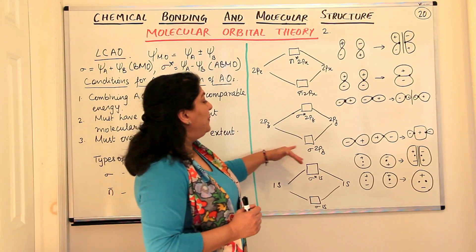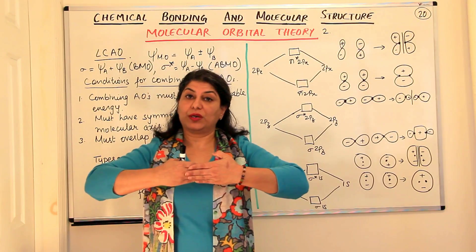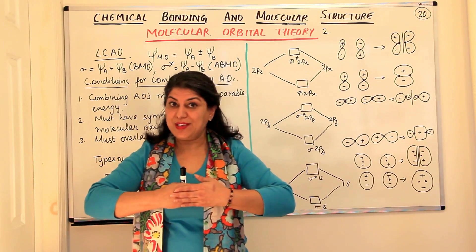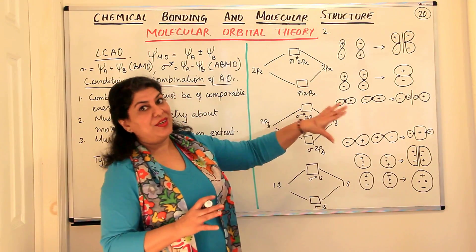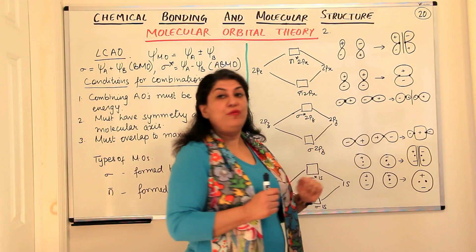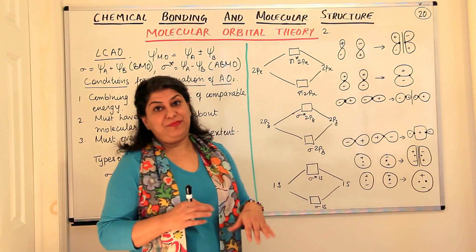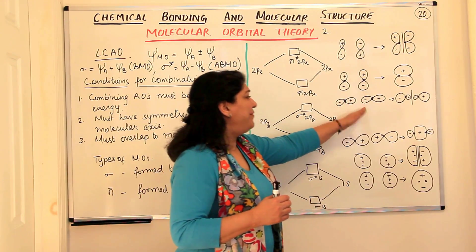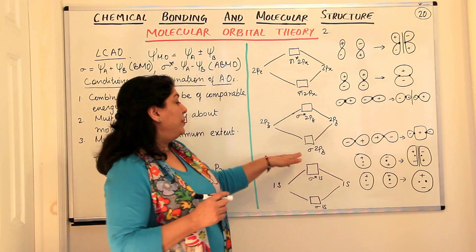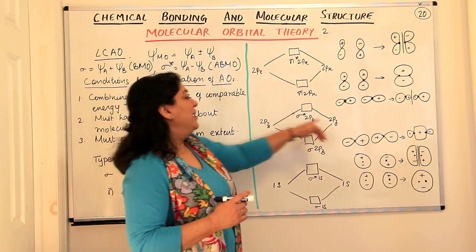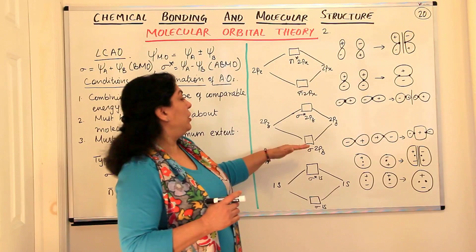Now let us take the 2pz orbital. The 2pz orbital is also along the internuclear axis, therefore the bonding that will take place would be sigma bonding. It would also result in constructive and destructive interference—constructive when positive lobe falls over positive lobe, and destructive when positive falls over negative. This would have a cancelling effect; that would have a reinforcing effect. The energy of the bonding molecular orbital sigma 2pz would be lower than the energy of the two orbitals, and the sigma-star anti-bonding molecular orbital would have energy higher.